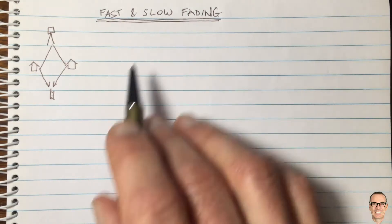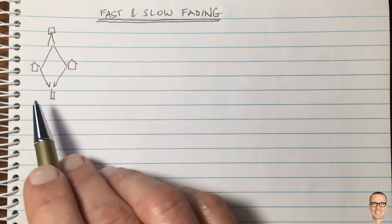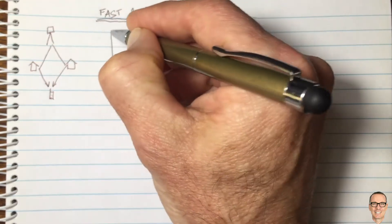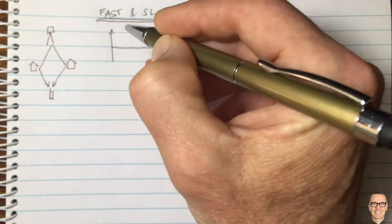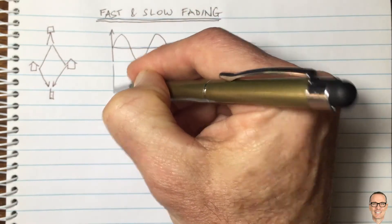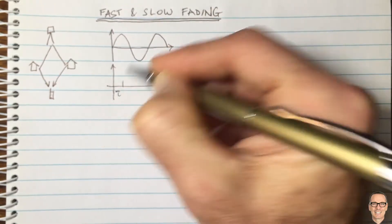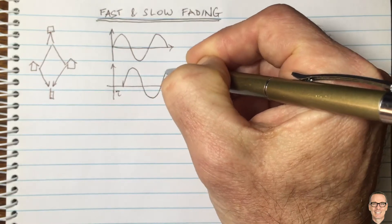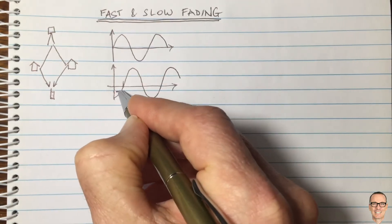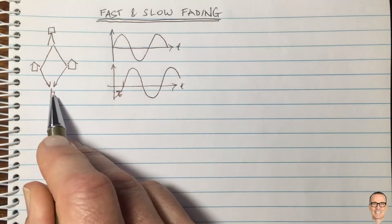Let's look at fast and slow fading in digital mobile communications. We've got a base station with the signal bouncing off some houses and coming to the receiver. If there are two signals, we can draw them: one is the carrier waveform, a sinusoid coming from one path, and another path coming with a delayed offset relative to that — a delay of τ. It's at the same frequency, just reflected off a building, meaning the overall path has a different delay τ.